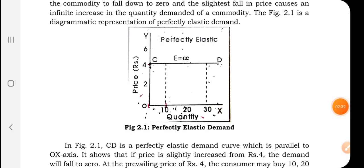For example, take the example of gold. If the price of gold falls, a sudden rush can be witnessed in the jewelry shops. And if the price of gold increases, you can witness very few or none visiting the shop.